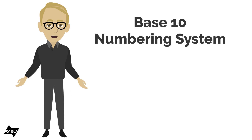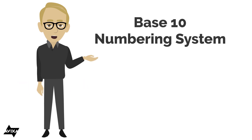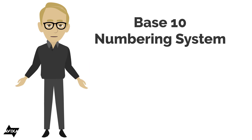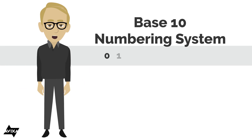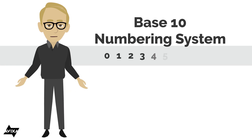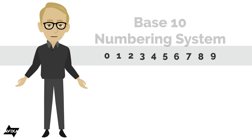We're all familiar with our base 10 numbering system. It's where we have 10 symbols that we use to represent quantities. Those symbols being 0, 1, 2, 3, 4, 5, 6, 7, 8, and 9.